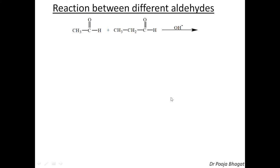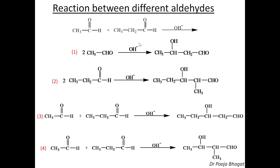Let us take the reaction between different aldehydes. Here I have taken ethanol and propanol. When the reaction takes place between ethanol and propanol in the presence of base under dilute alkaline conditions, what are the various possibilities? These are the four reactions which will take place, and you will end up with a mixture of four products — 1, 2, 3, 4. These are the four products obtained when these two aldehydes get condensed.